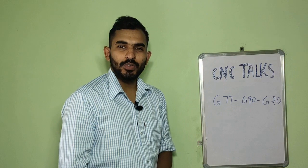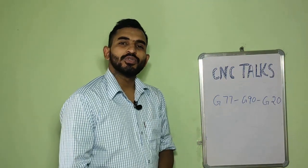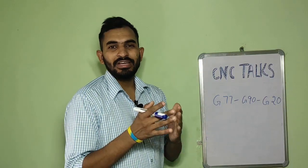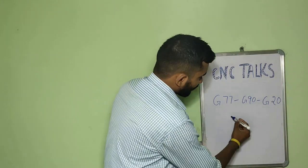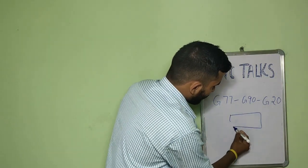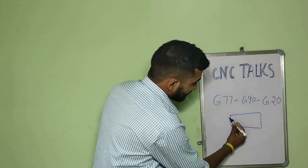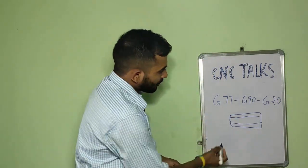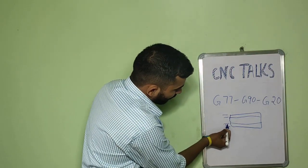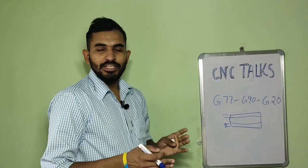G77 is basically a code used for stock removal of outer diameter of any component. Using G77, you can easily remove excess amount of material from a component. Let's suppose we have this component. This is a forging part and we need to cut down this much portion. You can easily remove this excess amount of material using G77.